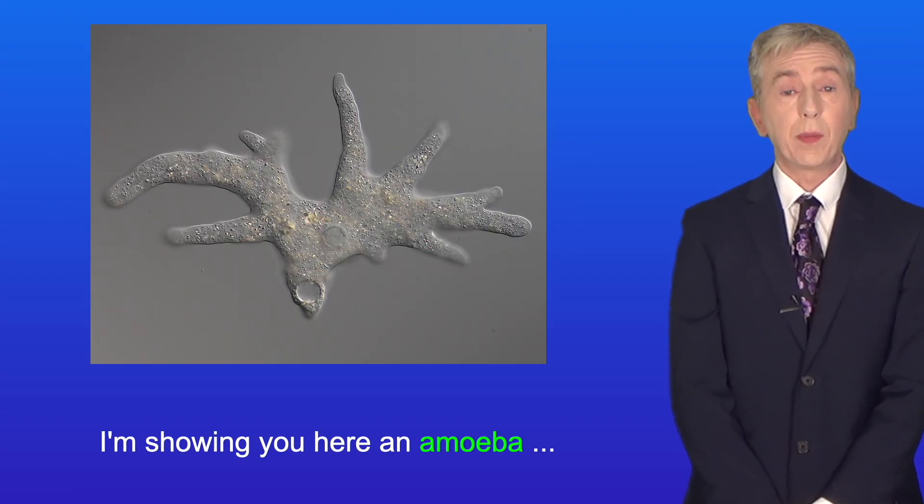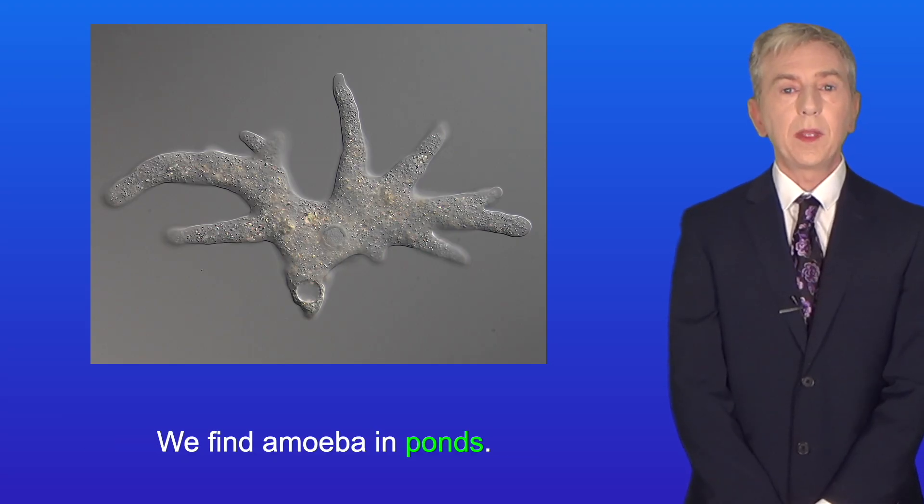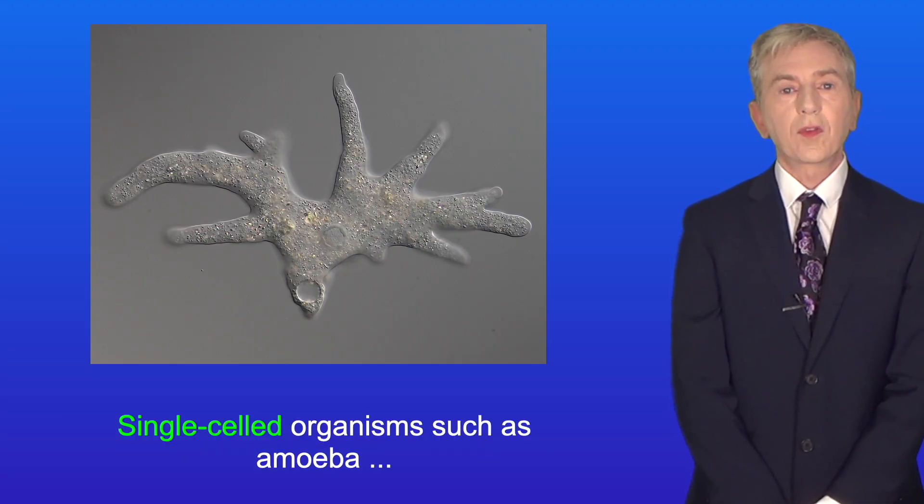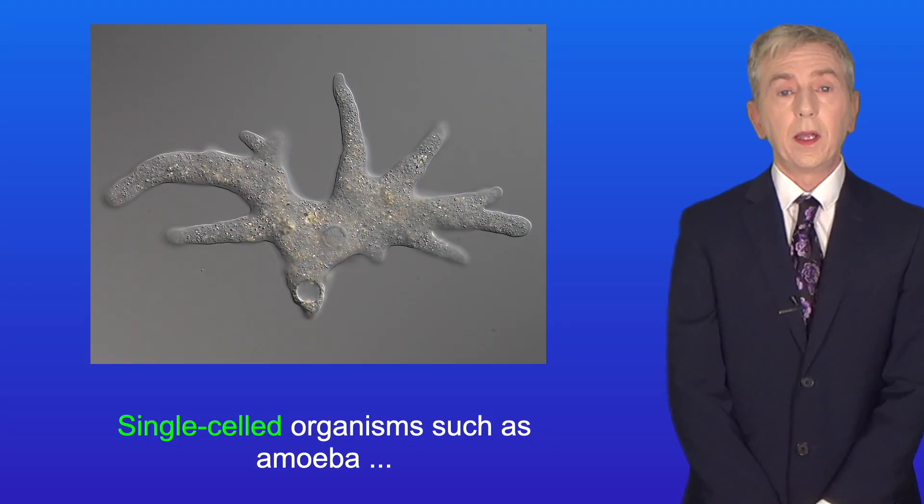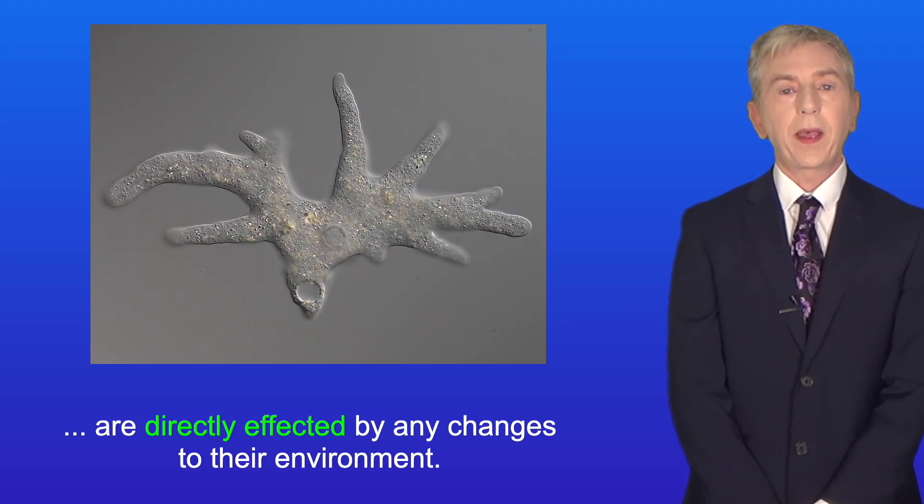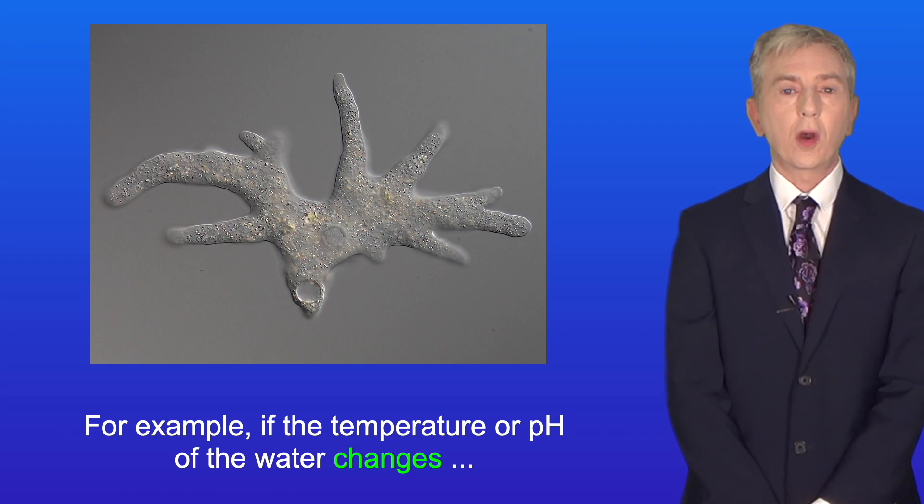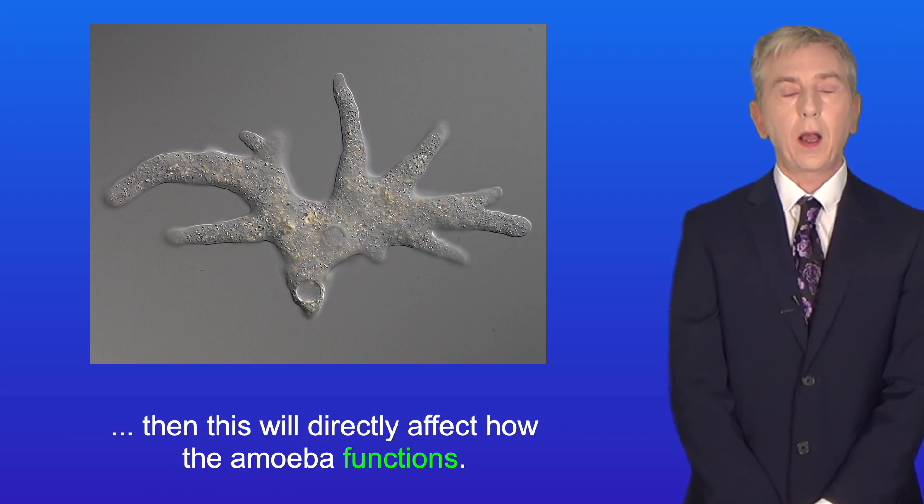I'm showing you here an amoeba, which is a single-celled organism, and we find amoeba in ponds. Now single-celled organisms such as amoeba are directly affected by any changes to their environment. For example, if the temperature or pH of the water changes, then this will directly affect how the amoeba functions.